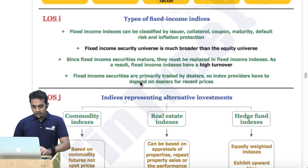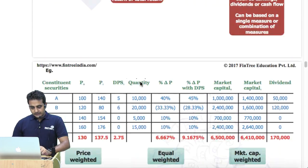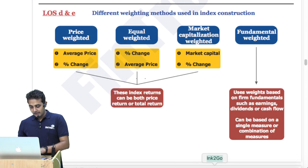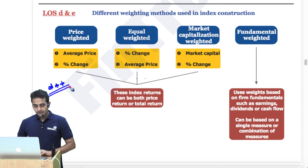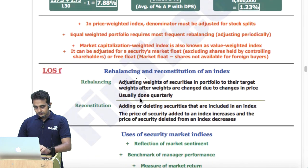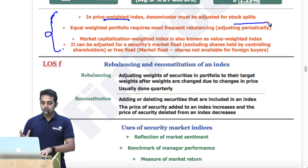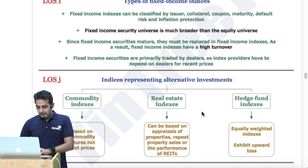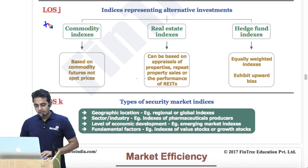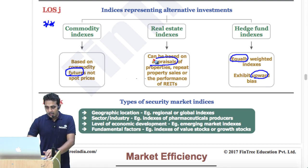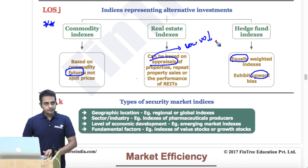Out of these topics, learning outcomes A, B, and C I might give a miss, but I would want to revise learning outcomes D and E the day before the exam. I would make sure I know the price weighted denominator adjustment and all those things. I would also revise the learning outcome on real estate indices because you need to remember the appraisal part — especially that it provides lower volatility than what it really is — survivorship bias, and the smoothing effect.